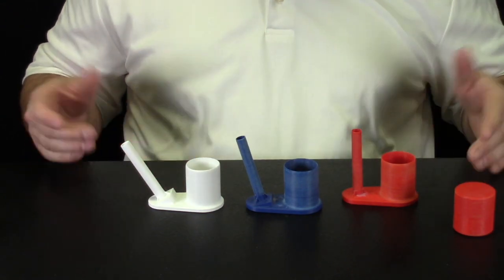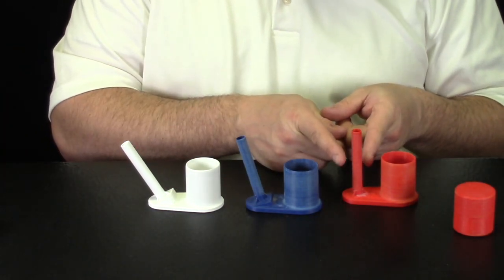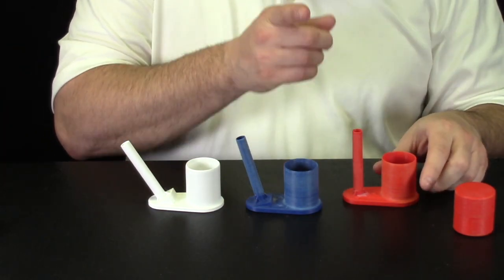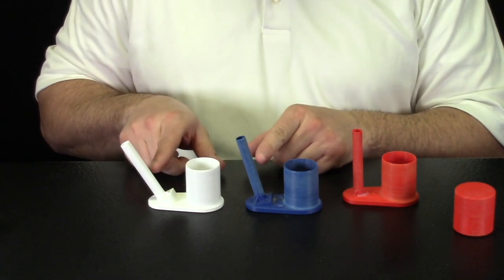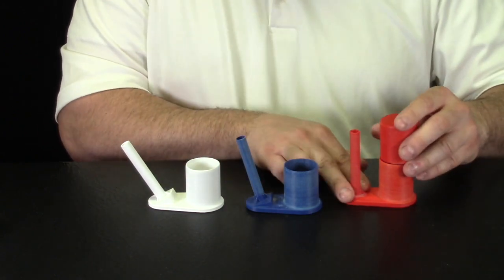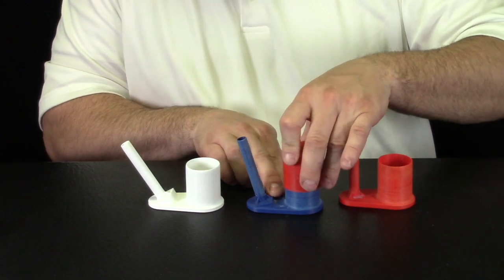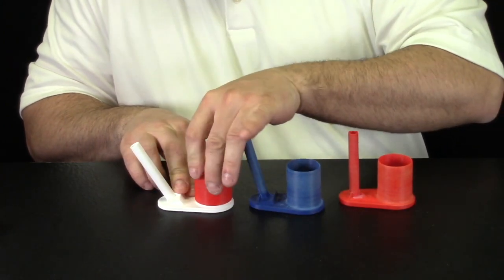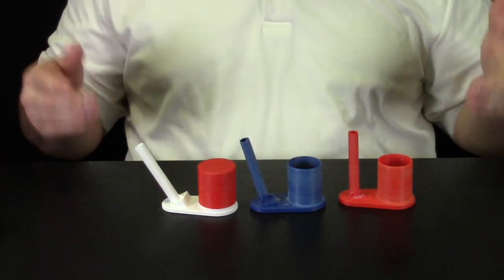The nice thing about designing these things on 3D printers is we can actually change the launch angle. Here I'm launching it straight up and now you can see my angle get more and more steep. The plunger works for all three of them. Same plunger, I can launch rockets.